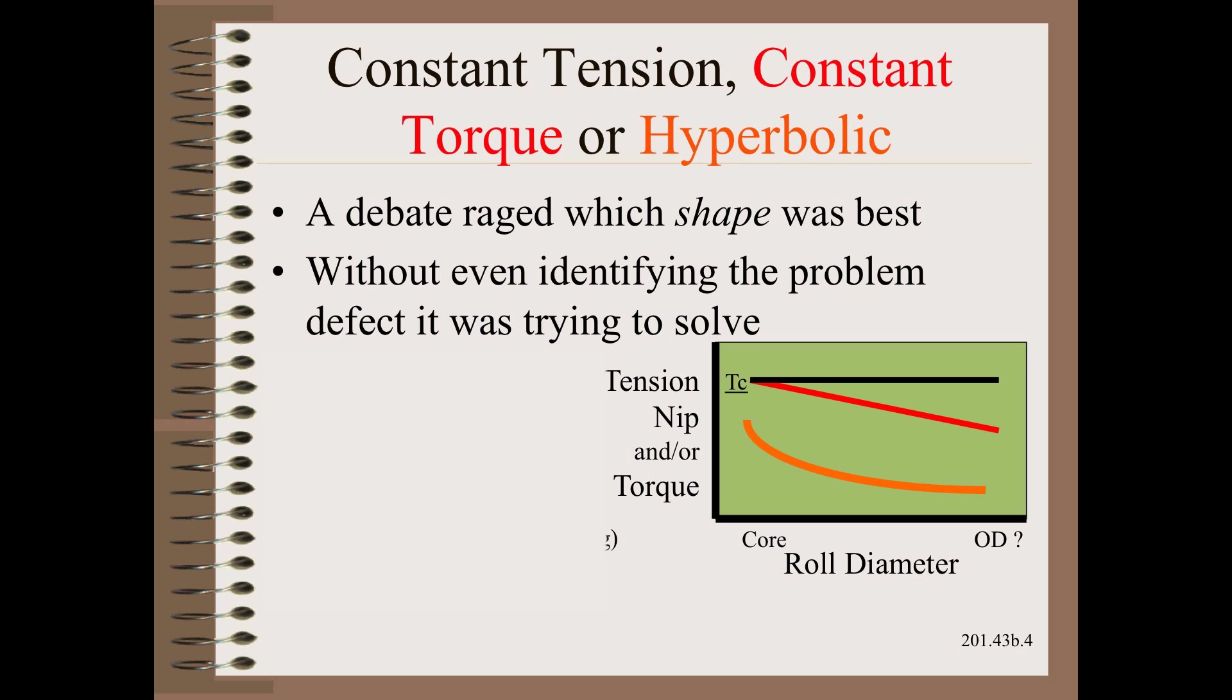There's been a decades-long debate on what the best shape of the taper curve is. Is it constant tension, constant torque, or hyperbolic? All of this without even identifying the problem they were trying to solve. It is absurd to think that one shape is best for all. It is absurd to think that the ideal shape for any particular defect, as yet unspecified, would be so convenient as to be one of those most easily programmed curves.